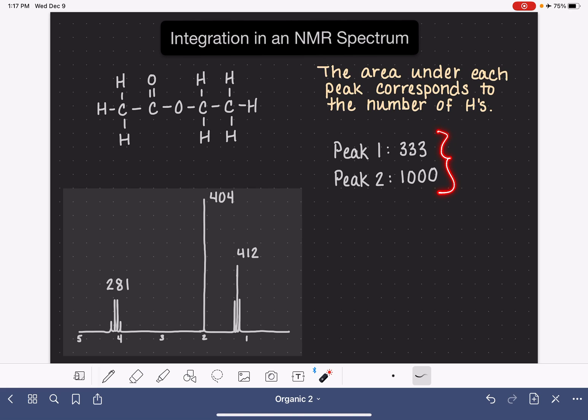These integrals are telling us that peak number one has an area of 333, and peak number two has an area of 1000. This is like the ratio of the size of peak number one to peak number two, and also a ratio of the number of hydrogen atoms in peak number one relative to peak number two. The way that we analyze this integral data is by taking these numbers and turning them into numbers that are more reasonable for a molecule. Our first step is to look at all the numbers in our integrals, decide which one is the smallest numerically, and divide everything by that small number.